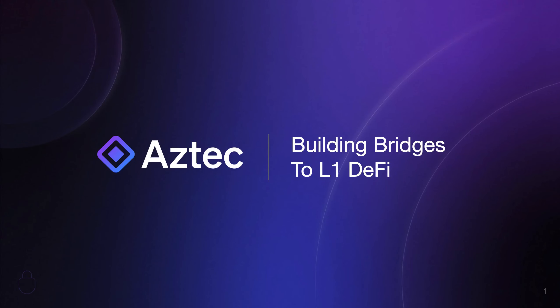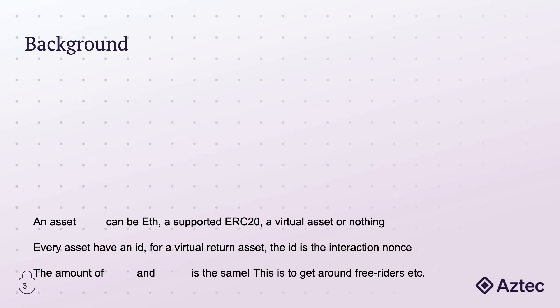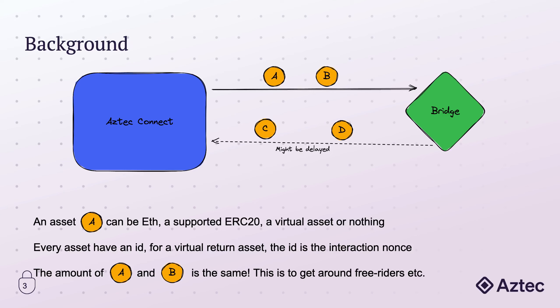Hey, I'm Lasse, part of the Aztec smart contract team. I'll give a short introduction on how to build bridges to L1 DeFi from Aztec Connect. The agenda will cover some background, getting started, how to design some of these bridges, writing a bridge contract, testing, and a couple of gotchas. As background on Aztec Connect, you can essentially see the interaction between Aztec Connect and the bridge as a swap with two input assets and two output assets, where the output might be delayed. This delay depends on whether the bridge is synchronous or asynchronous.